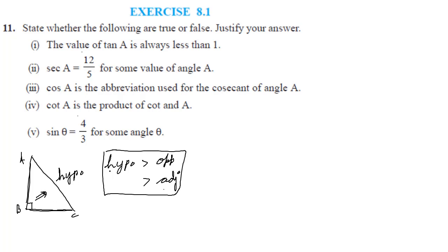If hypotenuse is given in the question as less than adjacent or less than opposite then that statement is false. So for all the 5 parts you can use this technique and you can get the answer whether the statement is true or false. So let's check the first part. In the first part they are saying tan A is always less than 1.